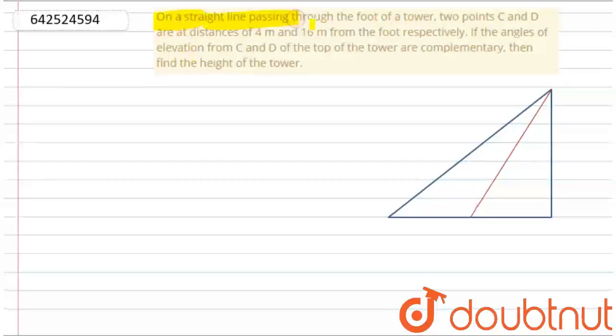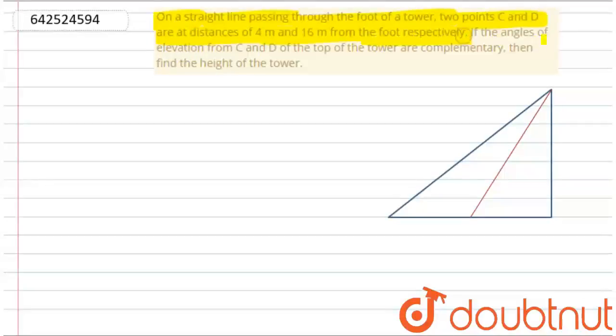On a straight line passing through the foot of a tower are two points C and D at a distance of 4 meters and 16 meters from the foot respectively. If the angle of elevation from C and D of the top of the tower are complementary, then find the height of the tower.